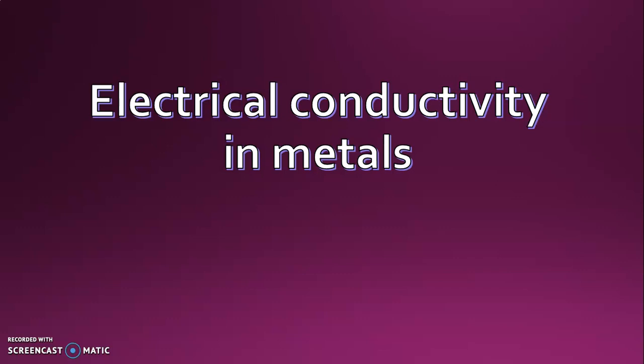Now we will see electrical conductivity. We already know what resistivity is. Resistivity means it is a measure to stop electrical current through the circuit. Conductivity is the reciprocal of resistivity. Electrical conductivity is defined as the measure of capacity or ability to pass electrical current through that material.